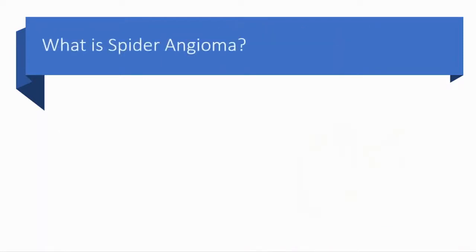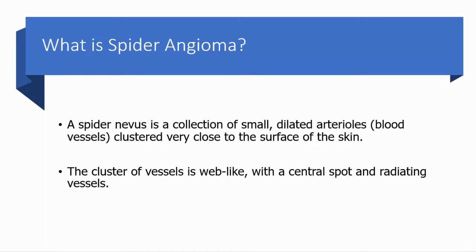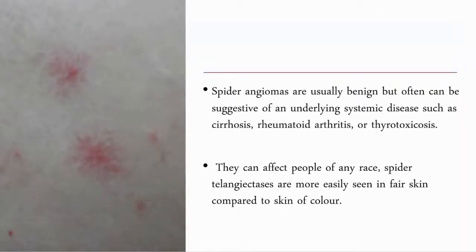What is spider angioma? A spider angioma or spider nevus is a collection of small dilated arterioles clustered very close to the surface of the skin. The cluster of vessels are web-like, with a central spot and radiating vessels. They are usually benign but often can be suggestive of an underlying systemic disease such as cirrhosis or rheumatoid arthritis.